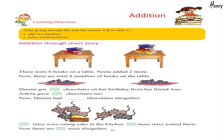There were six books on a table; Neeta added two more — now there are eight books on the table. Sheena got chocolates on her birthday from her friend Anu; Ankita gave chocolates too — now Sheena has chocolates altogether. Mice were eating cake in the kitchen; more mice joined them — now there are mice altogether.